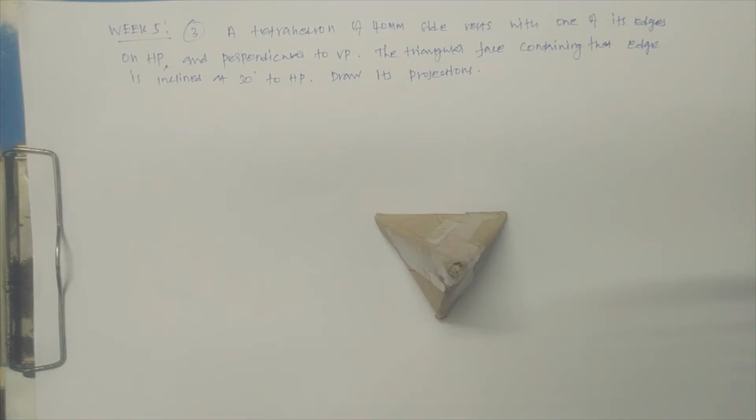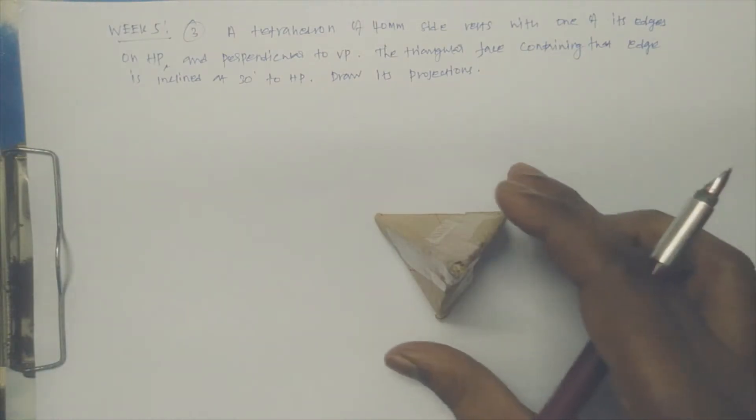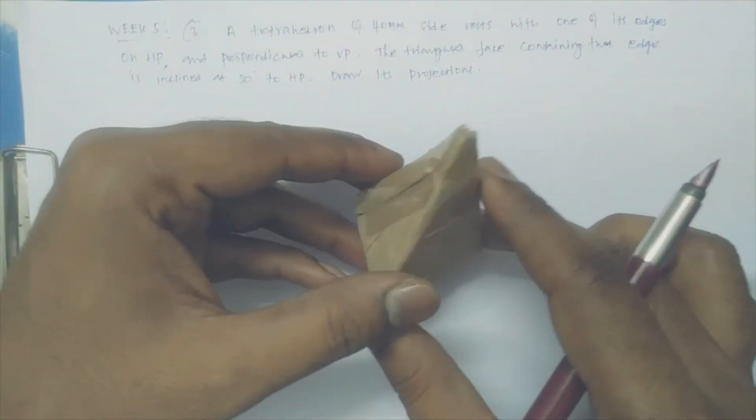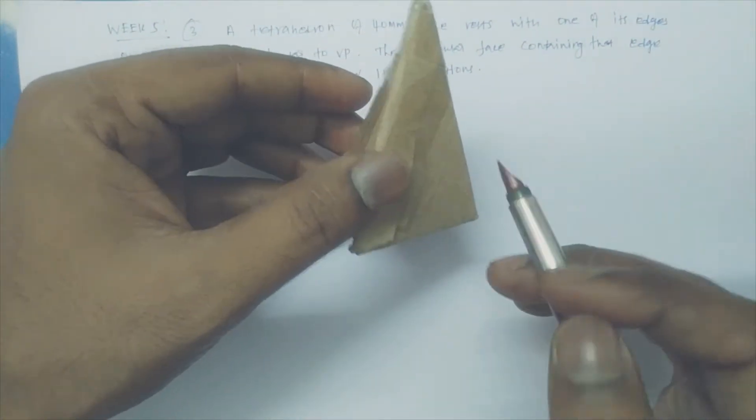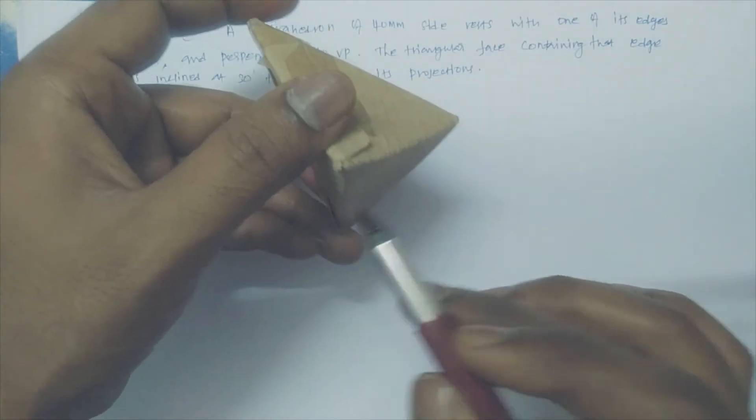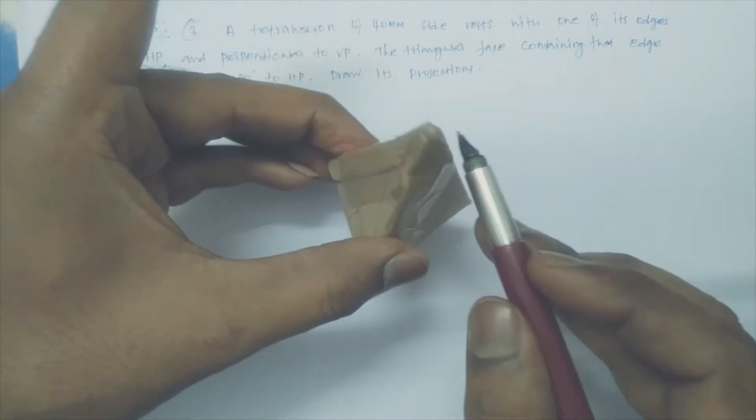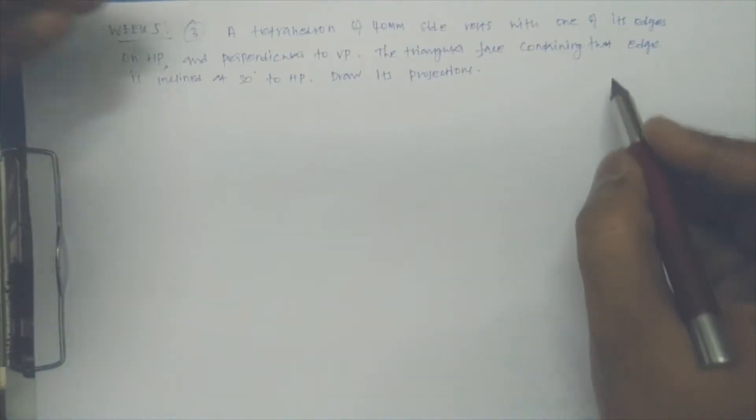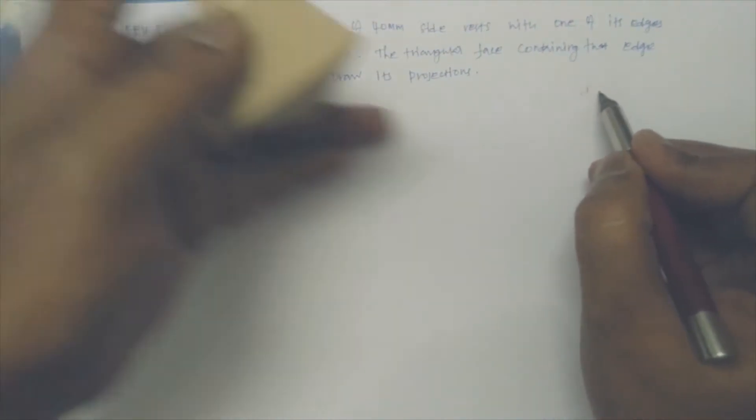Hello students, this class I'm going to show the change of position of tetrahedron projection. This is one model of tetrahedron. It is having six numbers of edges: one, two, three, four, five, six. This is also called a triangular pyramid.